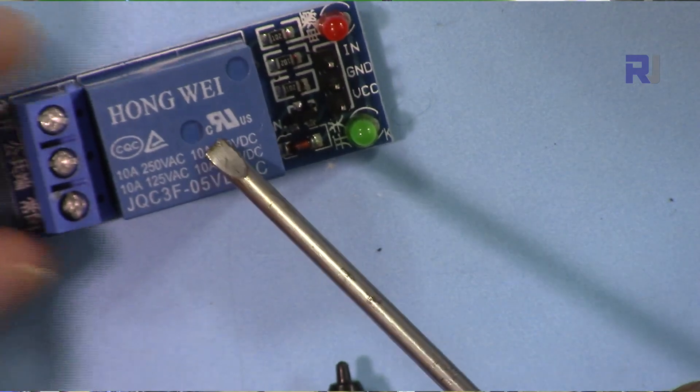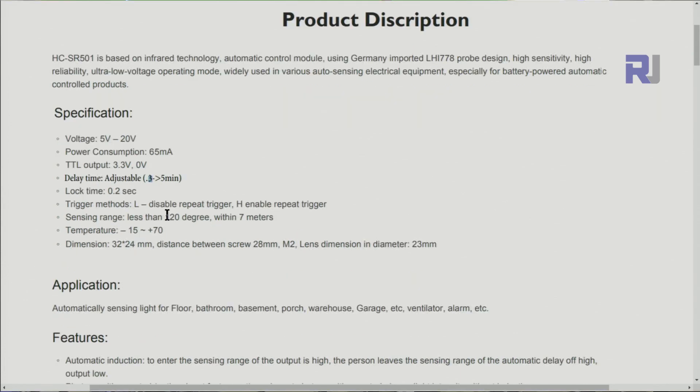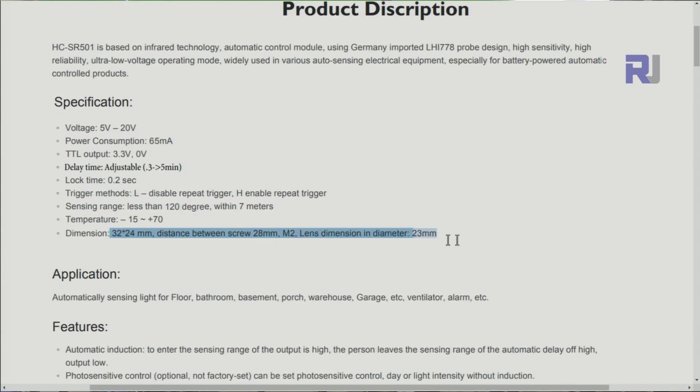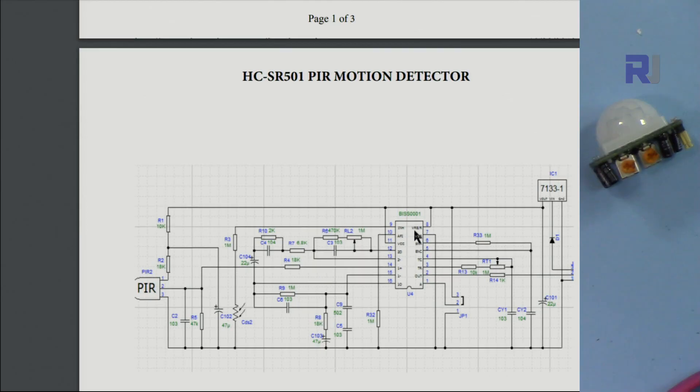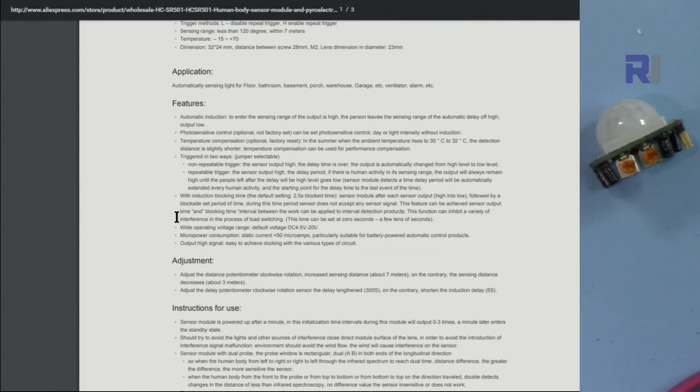Now let's have a look at the motion sensor's technical information. It works with between 5 to 20 volts and the power consumption is 65 milliampere. The angle that it works is 120 degrees up to 7 meters, and the temperature that it can operate between minus 15 to 70 degrees Celsius. Here is the dimension of the device. Here is the schematic of this. I will provide the link for this so you can download it if you want.